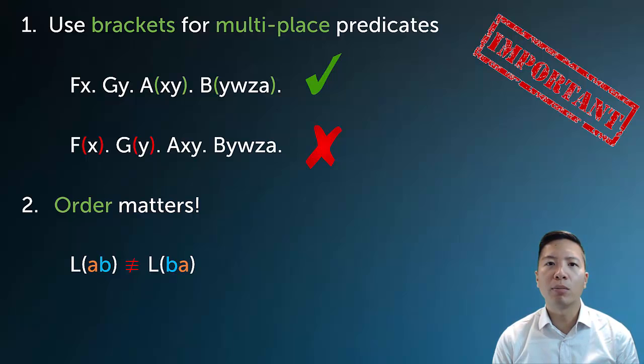The other important difference in multi-place predicates is that the actual order within the predicate of the subjects themselves matter. So here LAB doesn't necessarily mean the same thing as LBA. Sometimes they do, but often they don't, so we can never assume that we can just flip the order of the entries around. And we'll see how that works a lot in the examples to come.